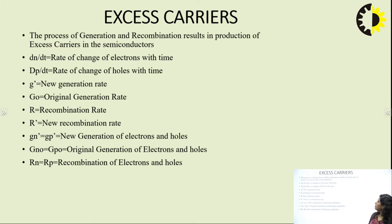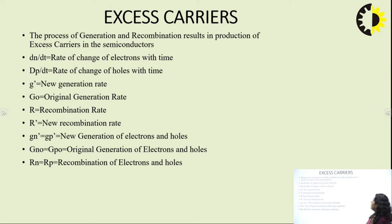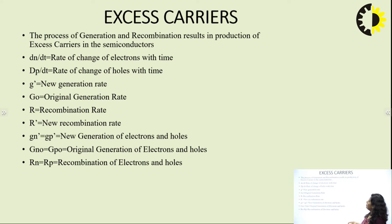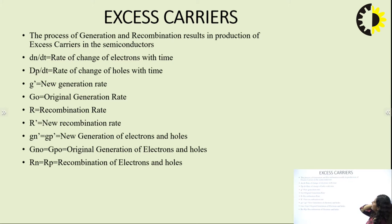In the case of detectors, whenever light falls on the detector it converts into electrical energy, which can be used in various applications or amplified at the receiver. Next, we have excess carriers. The process of generation and recombination results in production of excess carriers in the semiconductors.